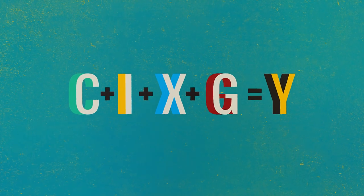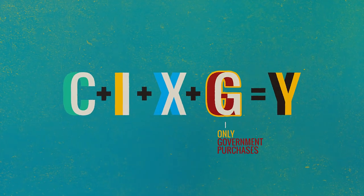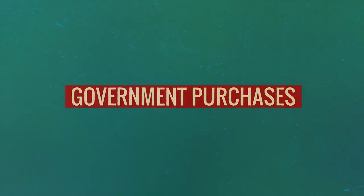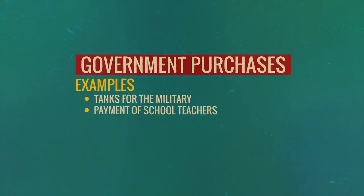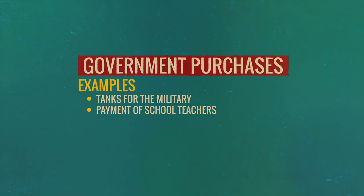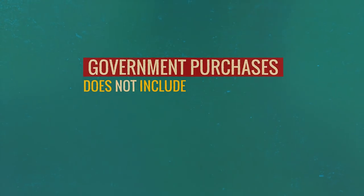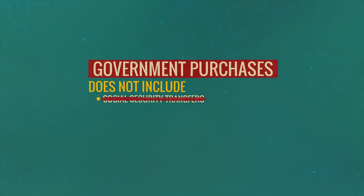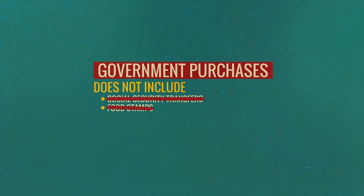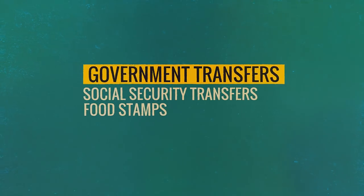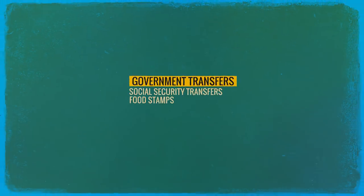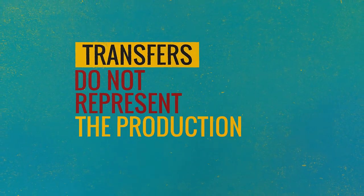We add in net exports for the reasons mentioned. Finally, the G in C plus I plus G represents only government purchases — the purchases of tanks for the military or the payment of school teachers to teach school. It doesn't include transfers like Social Security transfers to retired people or food stamps to the poor. Those are considered transfers from the government to individuals and don't represent the production of a product.